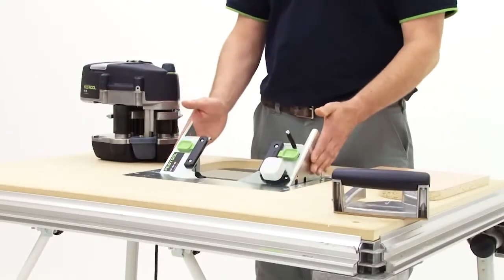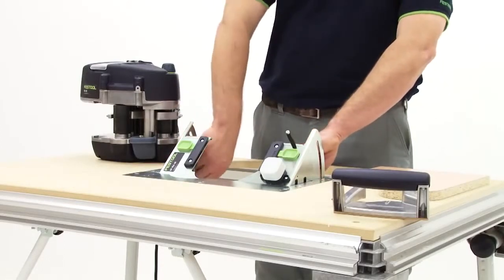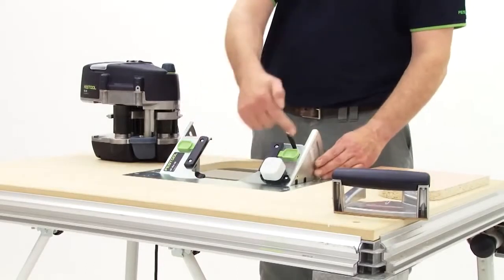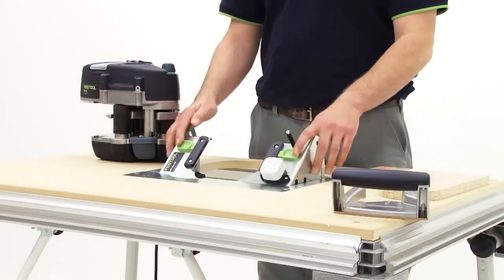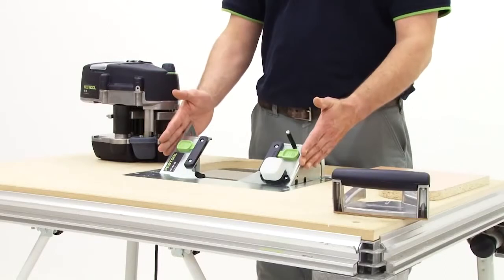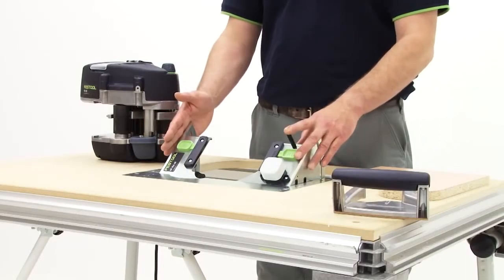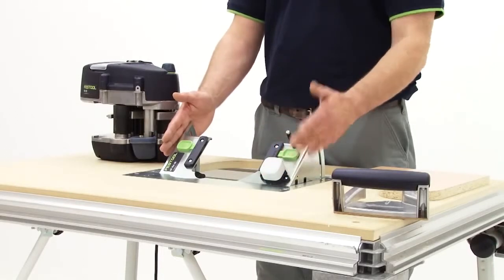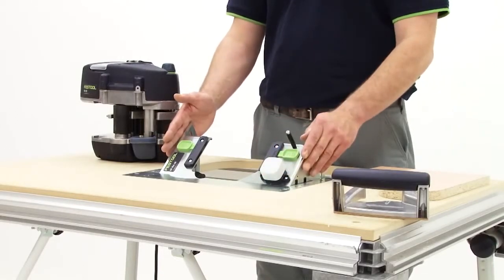So we bring the adapter plate up to an angle and then we can just lock this into position, and on the adapter plate here the two green tabs will hold the Conturo into the adapter plate. This helps to feed the edging through and at the front here I set this to position one because I'm using a one millimetre edging for this application.